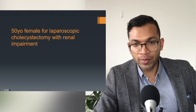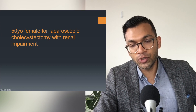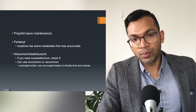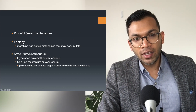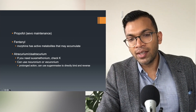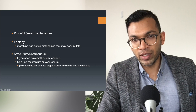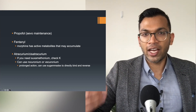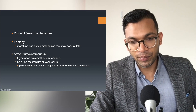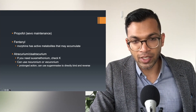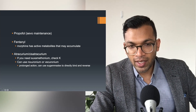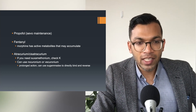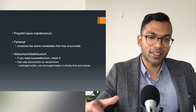Rocuronium and suxamethonium both have a high anaphylaxis rate. Is there a relaxant with no renal issue at all? You'll see this pattern time and time again. Propofol with TIVA is the standard approach. Fentanyl is preferred over morphine because morphine has active metabolites that may accumulate in renal failure — though morphine is used depending on how bad the renal failure is. Atracurium and cisatracurium are both non-organ dependent, so they are eliminated regardless of renal or liver impairment.